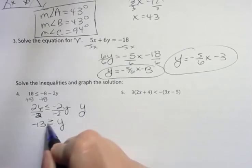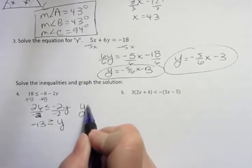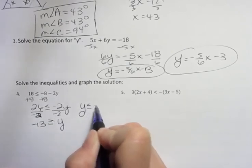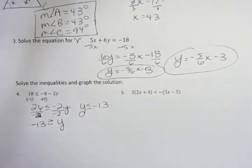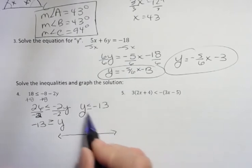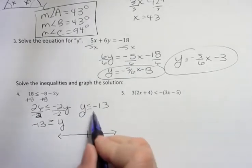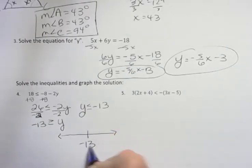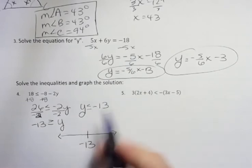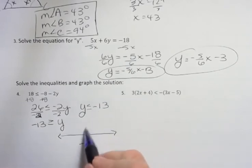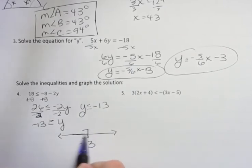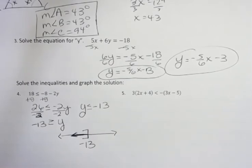So I get Y is, see how it's pointing to the Y? If I turn that around, I still need to have it pointing to the Y. I turn it around because it's easier to graph it if I keep the variable on the left. So my number is negative 13. Because I have an equal to part, I'm going to use a bracket and it's Y is less than that. So I say bracket and then shade to the left. And that's what that would look like. All right. That's the graph of that answer.